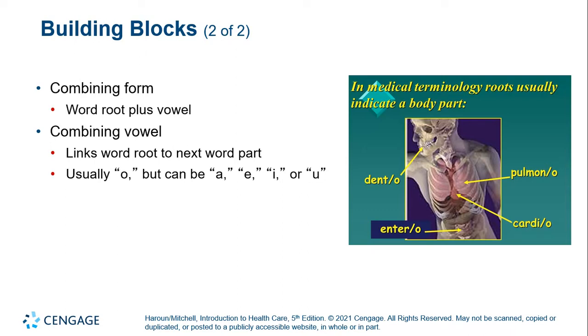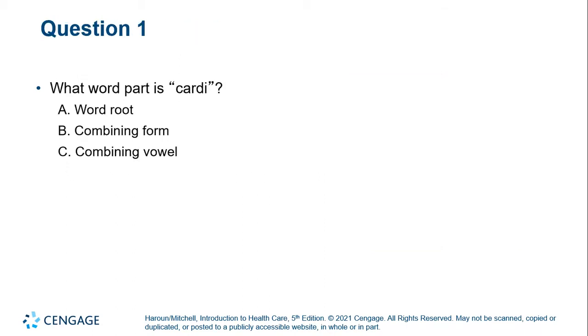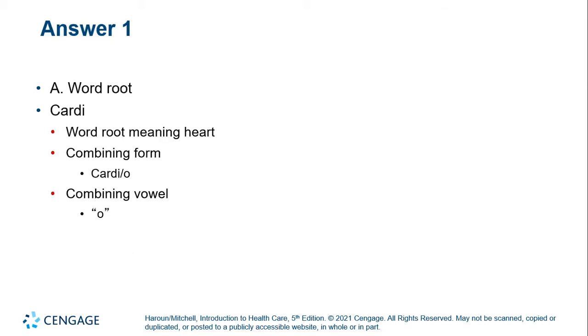Examples of combining forms include dento, pulmono, and cardio. What word part is 'cardi'? It is the root. 'Cardio' would be the combining form.